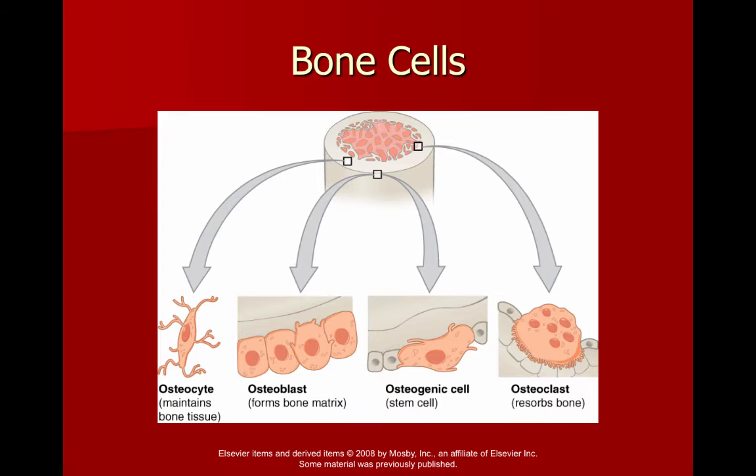You need to know the difference between the different types of bone cells and know their functions. Which cell do you believe would be responsible for causing a bone spur?